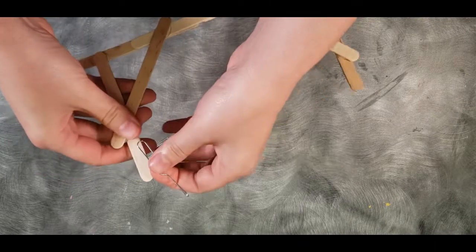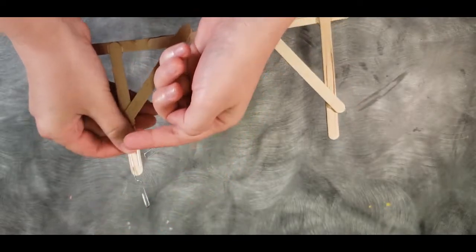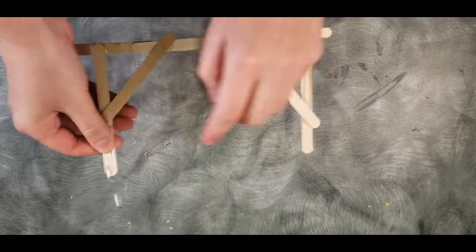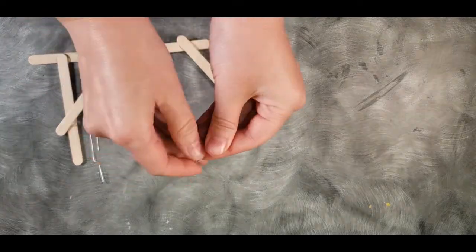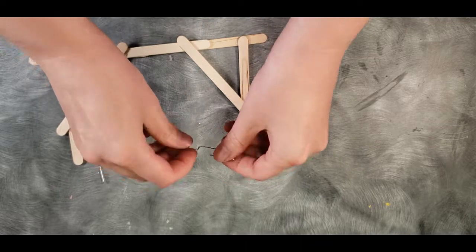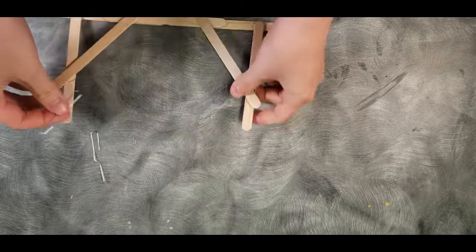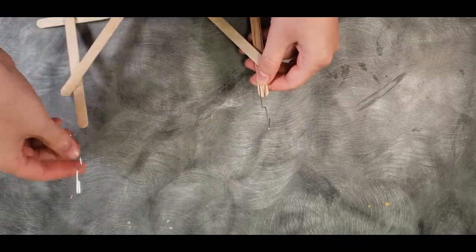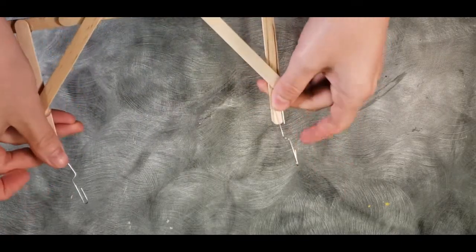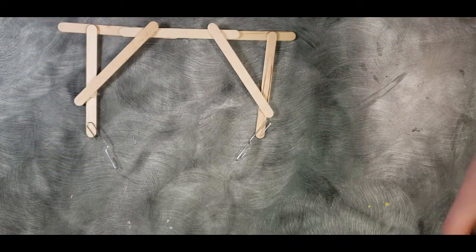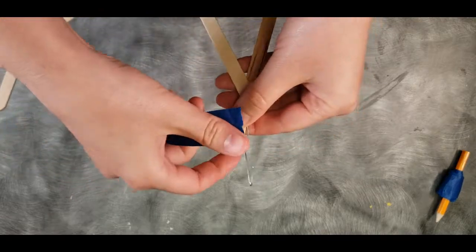That means when you attach this, the top loop is going this way instead of parallel to the bottom. Do that with one more paper clip. Unbend it, and then rotate it. Now you'll want to attach both of these paper clips with the hooks going in the same direction. It won't matter which one. I'm going to attach mine with tape.